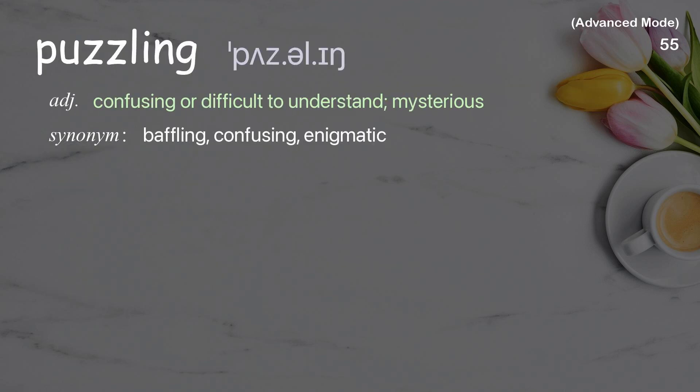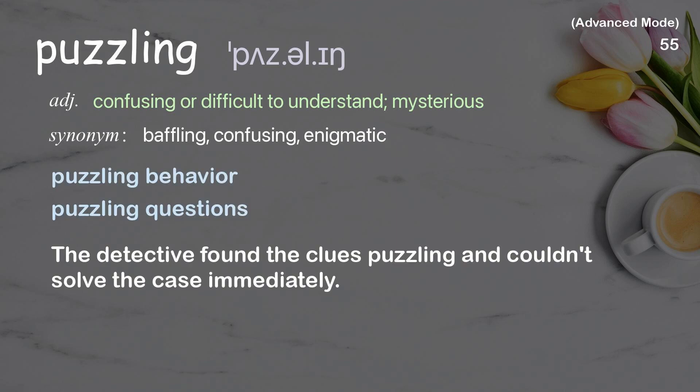Puzzling: confusing or difficult to understand; mysterious. Examples: puzzling behavior, puzzling questions. The detective found the clues puzzling and couldn't solve the case immediately.